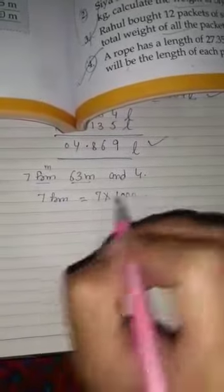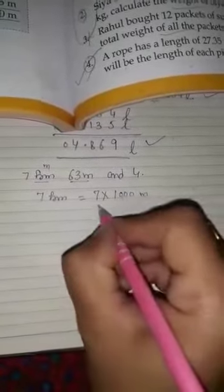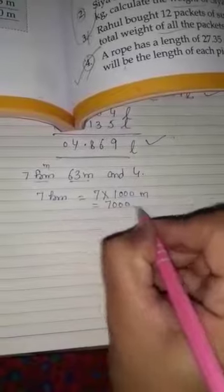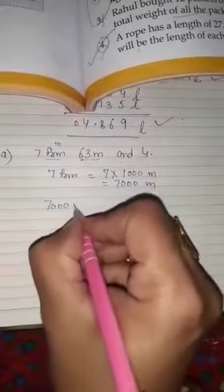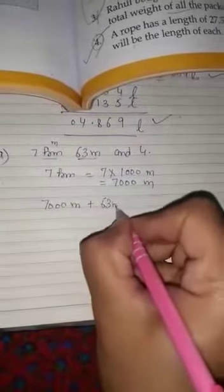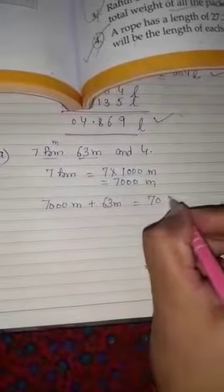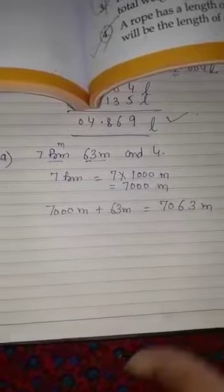Then multiply with the thousand. Thousand meter. Then 7,000 meter. There, 7,000 meter plus that given 63 m. When we add, then 7,063 m answer came.